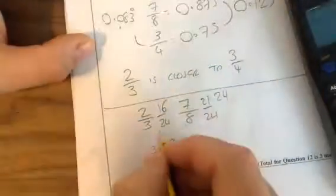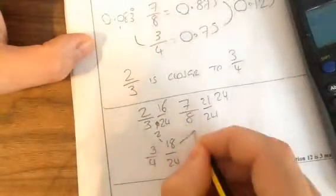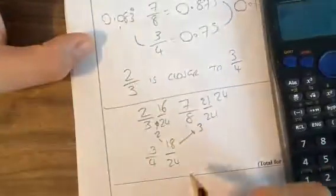Now, if we think this one here is 2 twenty-fourths difference, and that one there is, so 18, 19, 20, 21, it's 3 twenty-fourths difference.